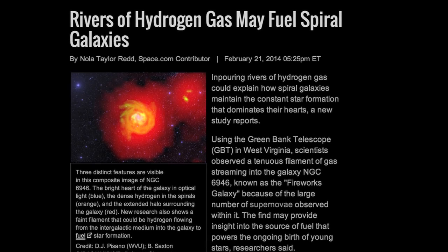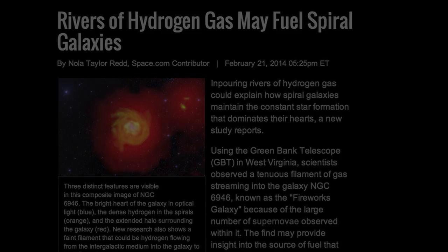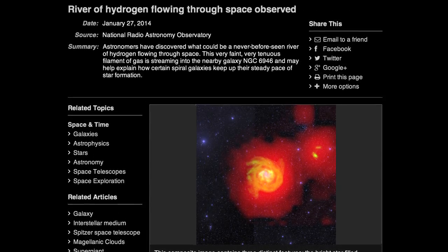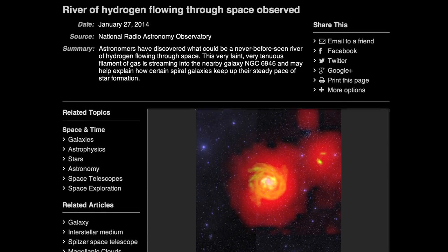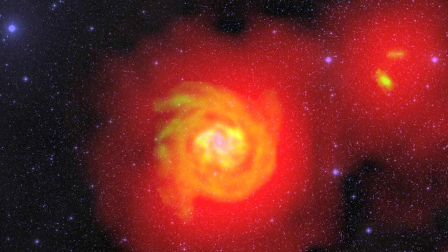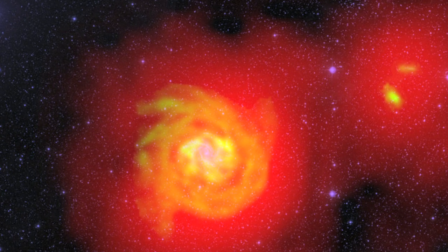What does the Electric Universe tell us about this so-called river of hydrogen in deep space? In an article in Science Daily titled River of Hydrogen Flowing Through Space Observed, it's reported that astronomer D.J. Pisano from West Virginia University has discovered what could be a never-before-seen river of hydrogen flowing through space.